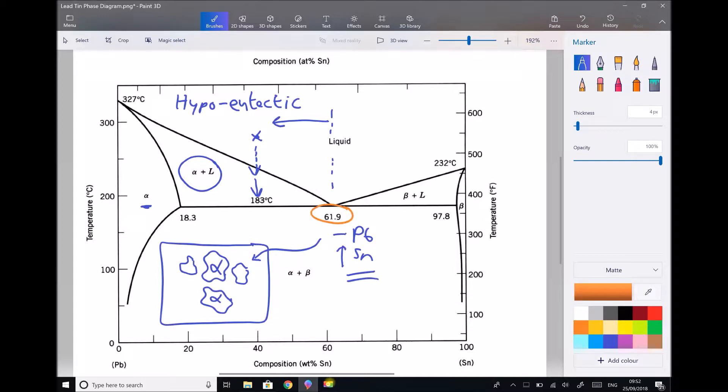Now that is actually going to continue happening until we get back to our eutectic composition. So in effect what's happening is the liquid is kicking out alpha, so we're going from 40% tin to 50% tin as we kick out more alpha, to 60% tin kicking out more alpha, to 61.9% tin once we've kicked out sufficient alpha to reach the eutectic composition.